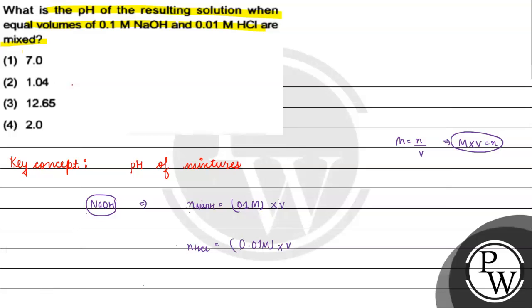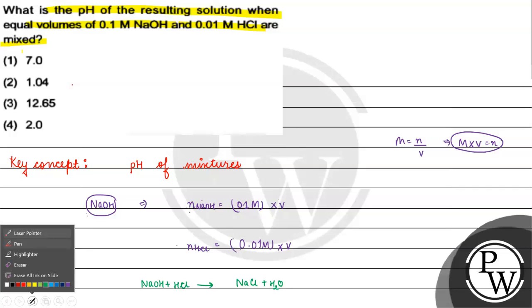Now, we know that if 1 mole is NaOH, then it will neutralize 1 mole HCl and make NaCl and water. So, if we have 0.1 molar into V moles of NaOH, there will be more moles of HCl. But there will not be more.